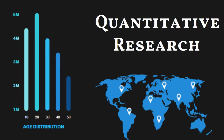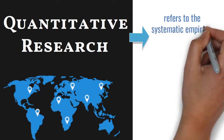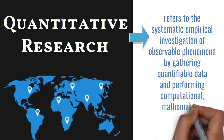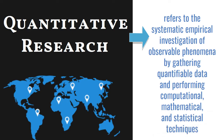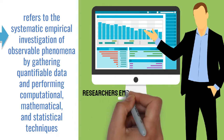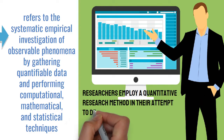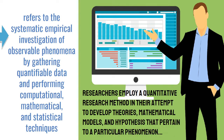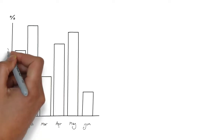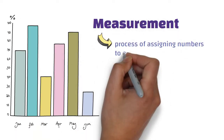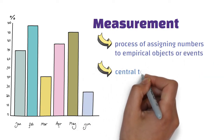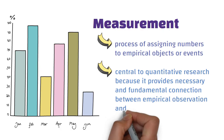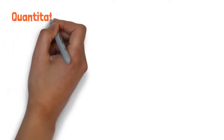On the one hand, quantitative research refers to the systematic empirical investigation of observable phenomena by gathering quantifiable data and performing computational, mathematical, and statistical techniques. Scholars and researchers employ a quantitative research method to develop theories, mathematical models, and hypotheses pertaining to a particular phenomenon under investigation. This explains why measurement — the process of assigning numbers to empirical objects or events — is central to quantitative research, as it provides the fundamental connection between empirical observation and mathematical expressions.